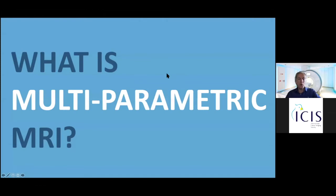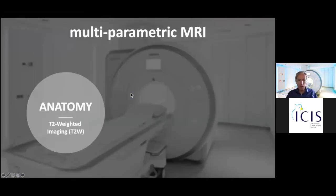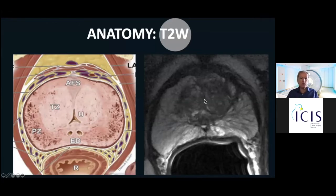Let's get started. What is multiparametric MRI? Multiparametric MRI consists of three techniques that help each other. The first technique is T2-weighted imaging that shows anatomy. Just like a drawing in black and white, you can see the structures of the prostate — a normal prostate with the peripheral zone being bright and some mixed signal intensity in the transition zone.